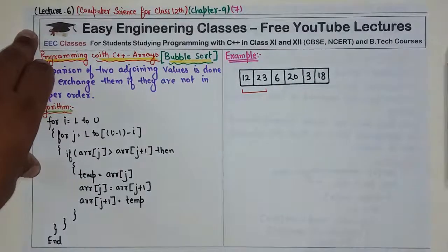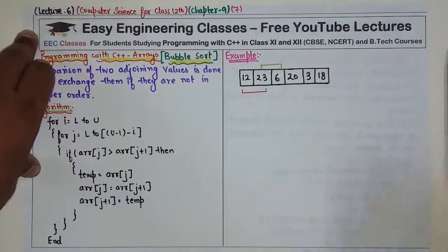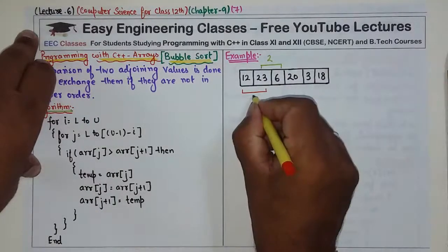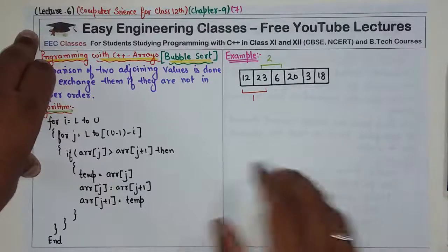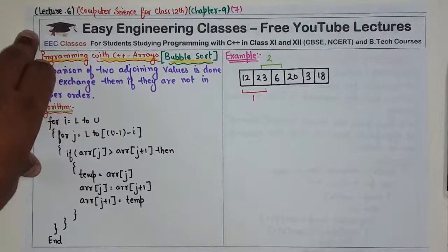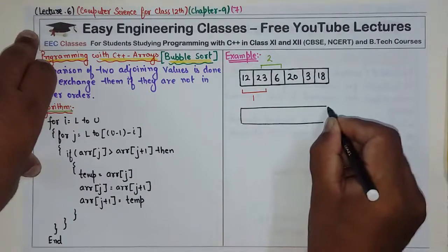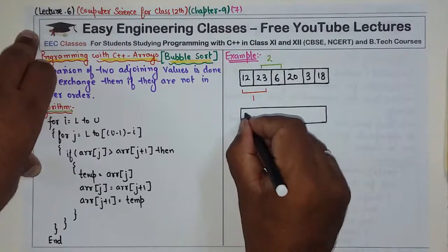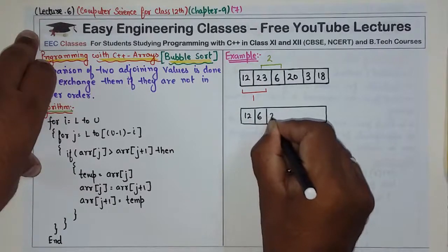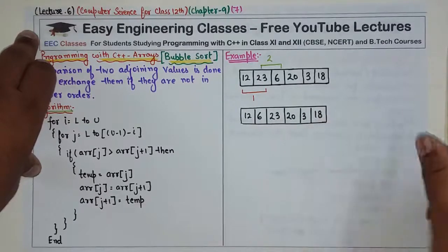We will go further. In the second comparison, we are comparing 23 and 6. Since 6 is smaller than 23, we simply have to interchange them. After interchange, the array becomes: 12, 6, 23, 20, and 18.